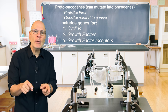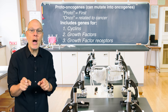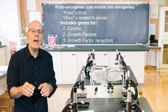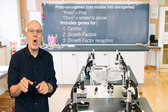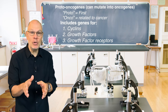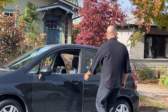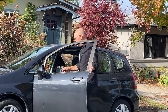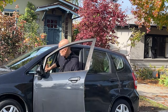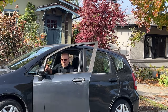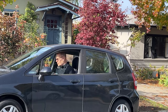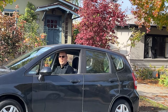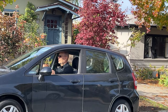The problem is when proto-oncogenes mutate, then they can become cancer-causing oncogenes. Here's a great analogy to help you understand the difference between these two types of genes and the way that mutations in them can lead to cancer.